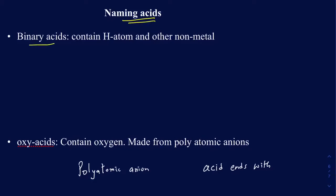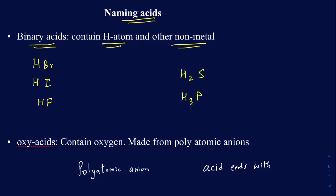One of them is called a binary acid. A binary acid just means you're going to have a hydrogen atom and another non-metal bonded together. So there are only two types of elements in binary acids. For example, I could have HBr, HI, HF, H2S, or H3P, because all they really have is just two different types of non-metals.